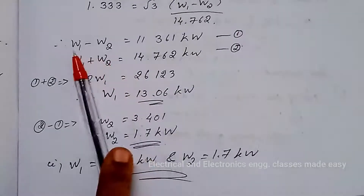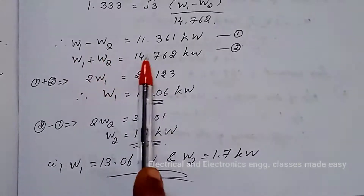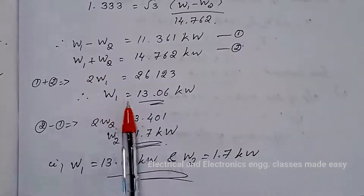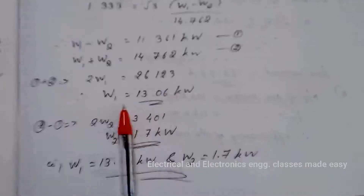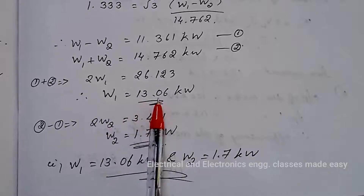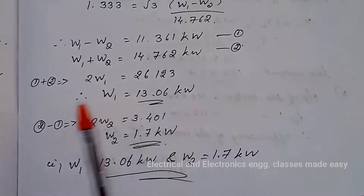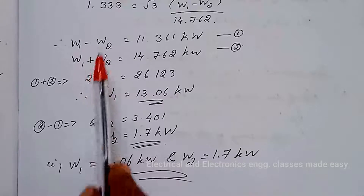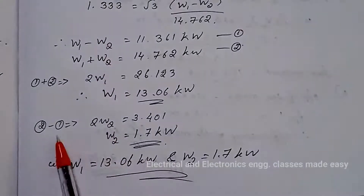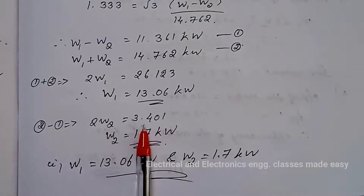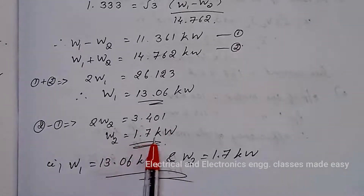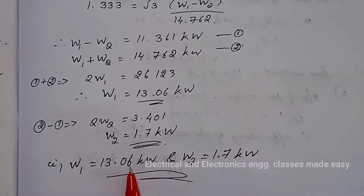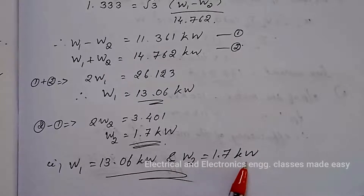Solving the two equations: adding them gives 2W1 = 26.123, so W1 = 13.06 kW. Subtracting Equation 1 from Equation 2 gives 2W2 = 3.401, so W2 = 1.7 kW. Therefore the watt meter readings are 13.06 kilowatt and 1.7 kilowatt.